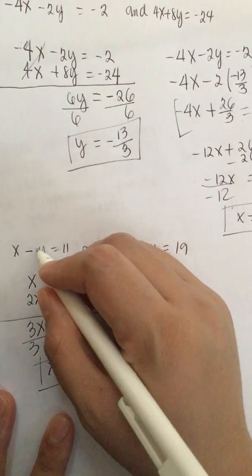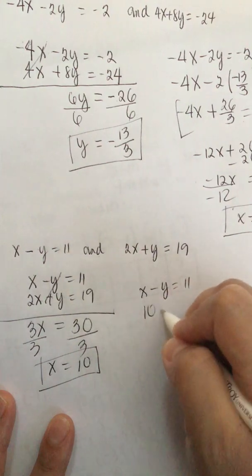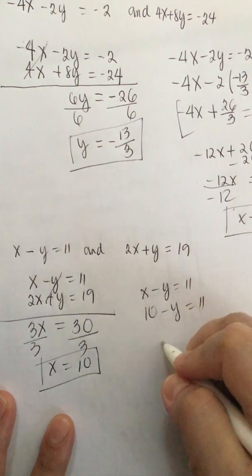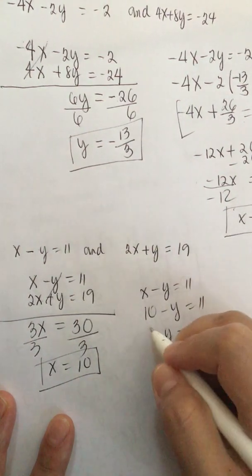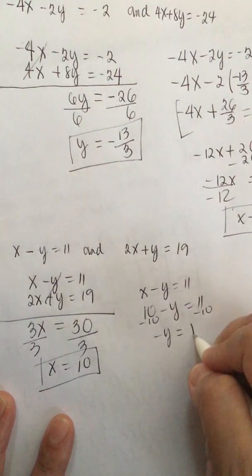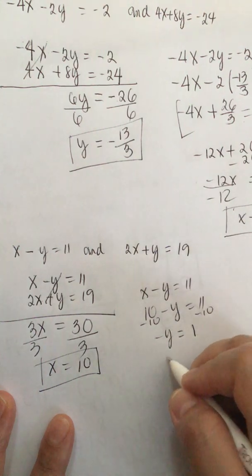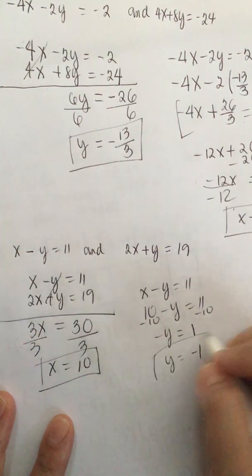So let's use this equation: x - y = 11. x is 10 minus y equals 11. So we subtract 10 from both sides. So 11 - 10 is 1, which means -y = 1. So y is equal to -1.